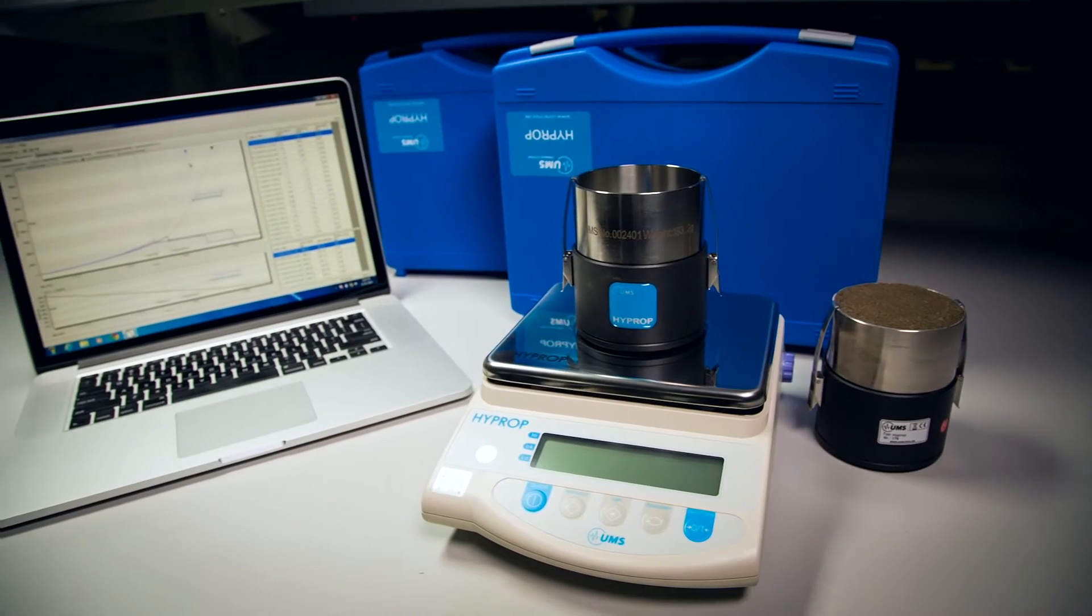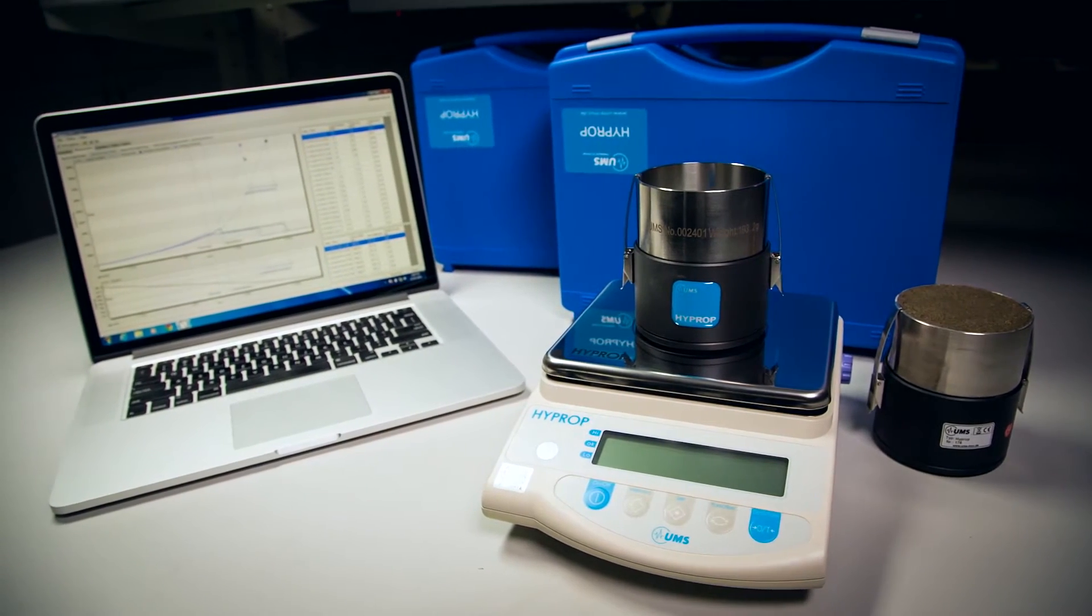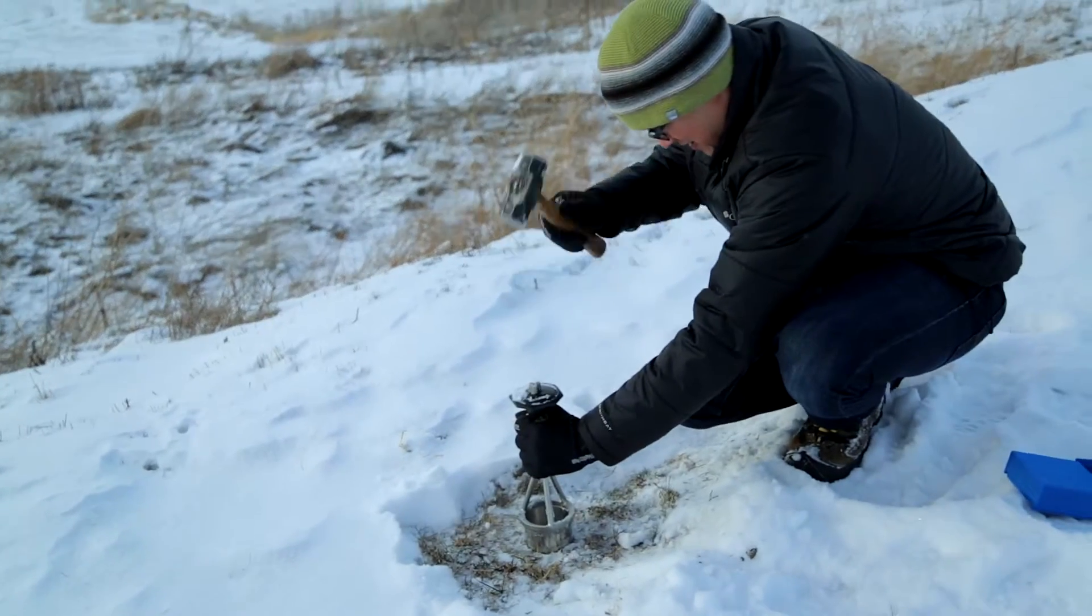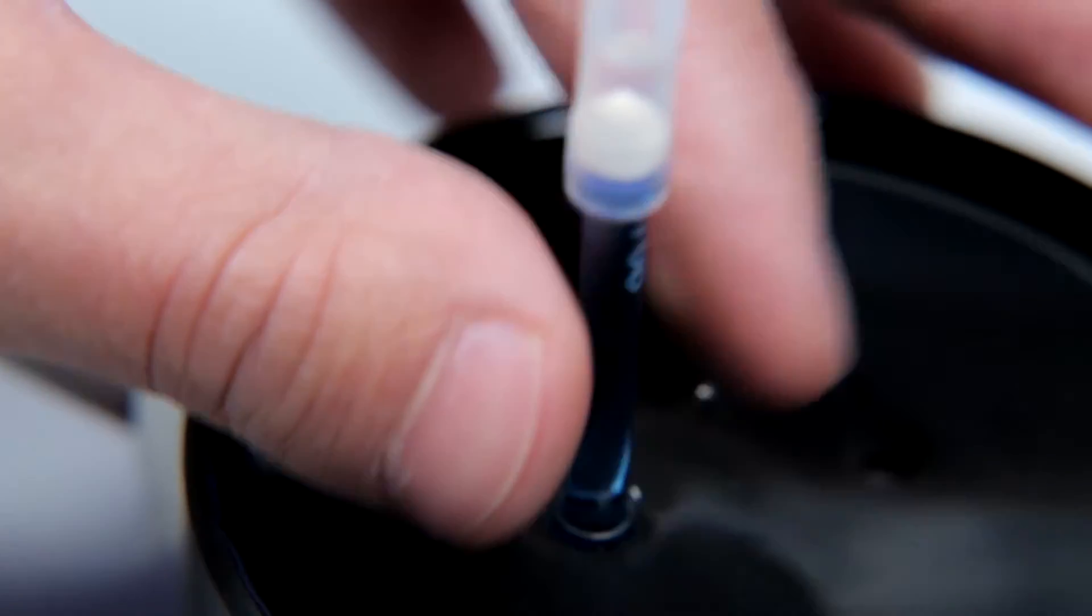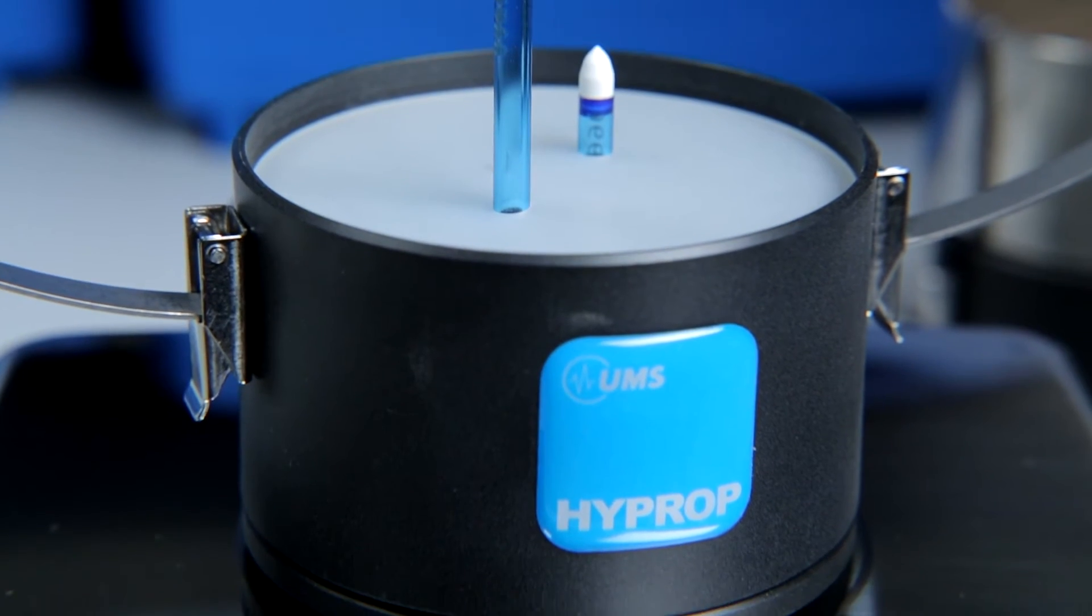This method relies on evaporation instead of removing water by force. You take a soil core, saturate it from the bottom, insert tensiometers at two different depths, and place it on a high precision balance.